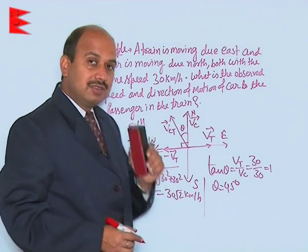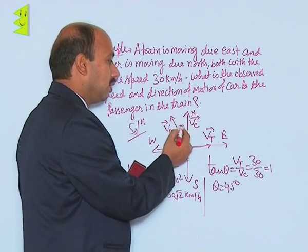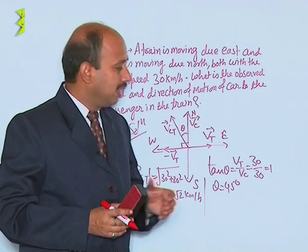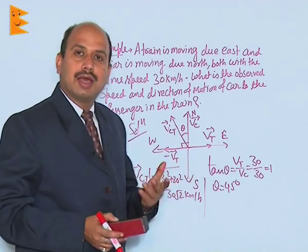It means the passenger inside the train will observe the car is going to this side, which is making an angle of 45 degrees with the north direction. It means we can say the passenger is observing the car is moving in the west-north direction.